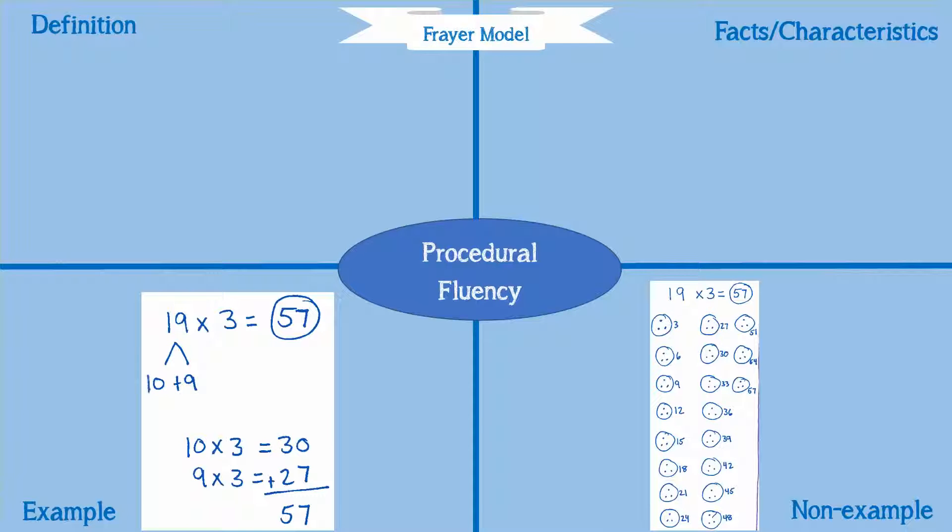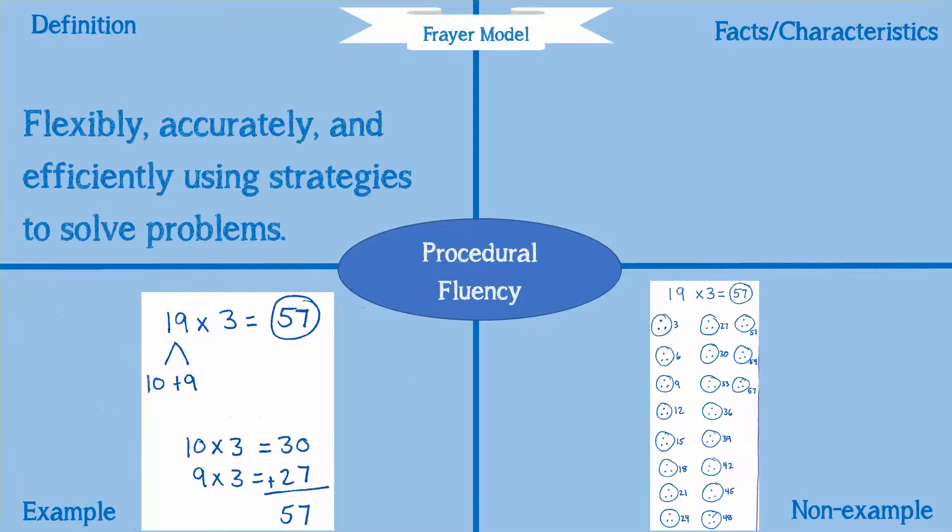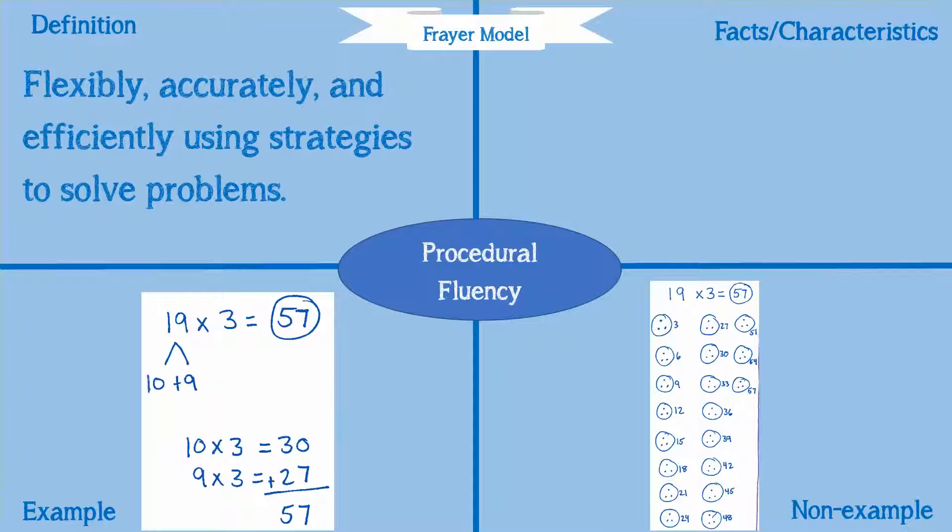So let's finish out our Frayer model. When we think about procedural fluency, we want the kids to be flexible. We want their answers to be accurate. We don't want them to get it done quick without getting the right answer. And we want it to be efficient. We don't want them to have to sit there and draw 19 circles and three dots in each circle. That's just not something that, as an adult, they're going to want to do. We want them to use strategies to solve the problems that are flexible, accurate, and efficient.